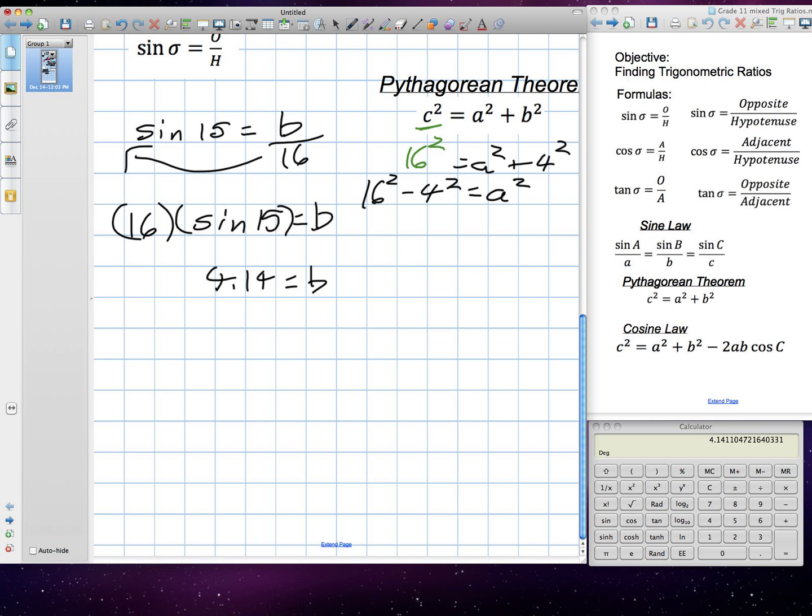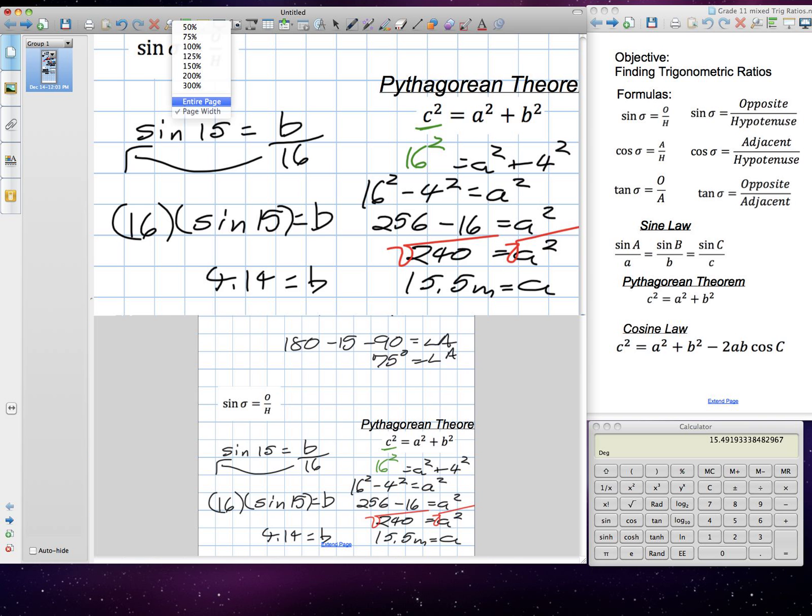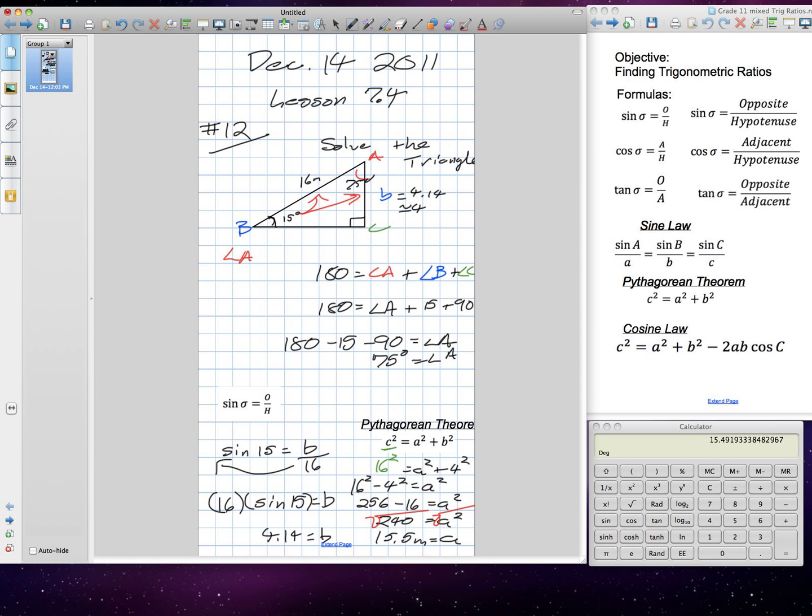16 squared... I guess we better do it down here. Top of my head, I'm not sure. 256. 256 subtract 16 is equal to A squared. 256 minus 16, anyone know? Good. 240 is equal to A squared. Now, to get A by itself, I square root both sides. A is equal to the square root of 240, which is 15.49 or 15.5 meters. So, we've now solved for everything in this question here.